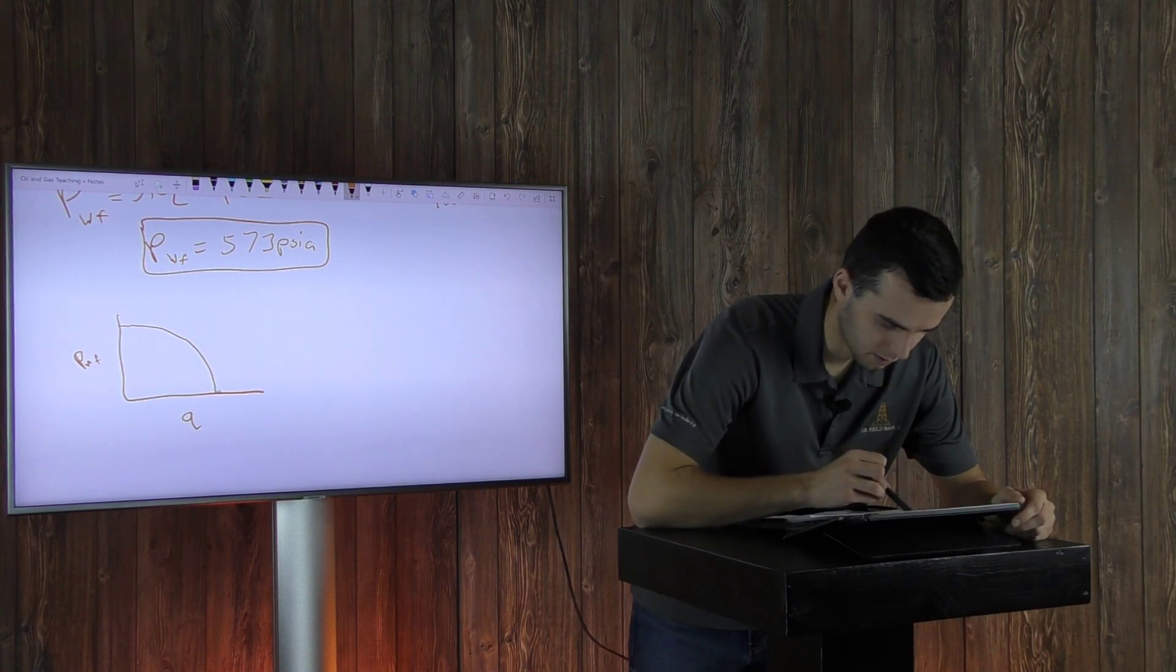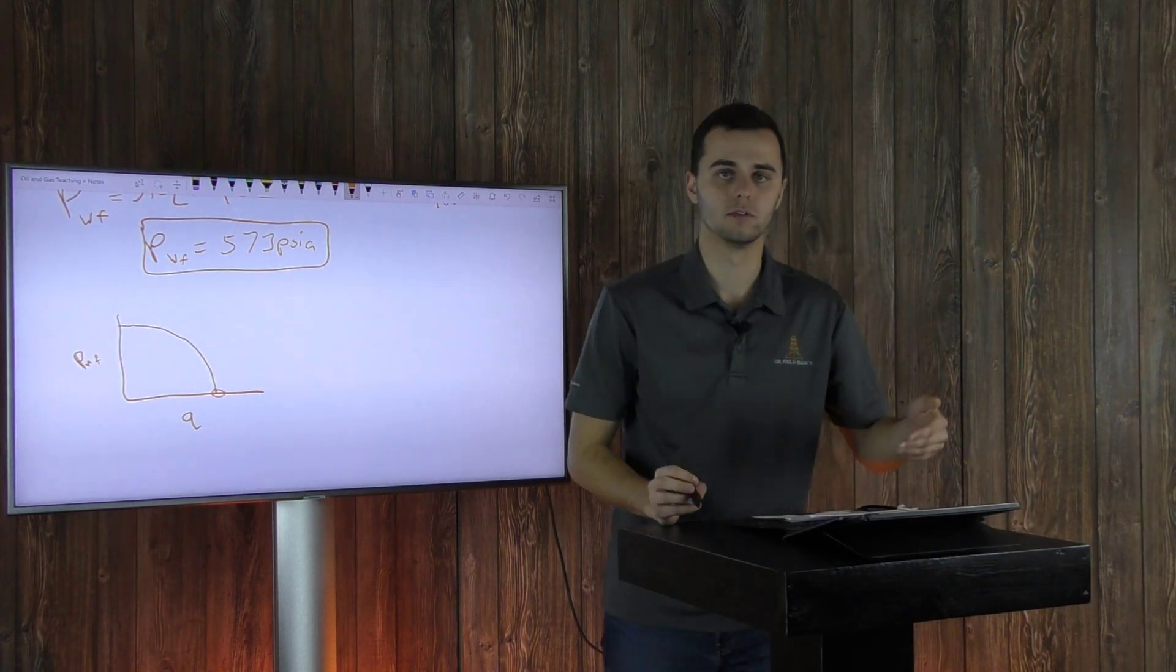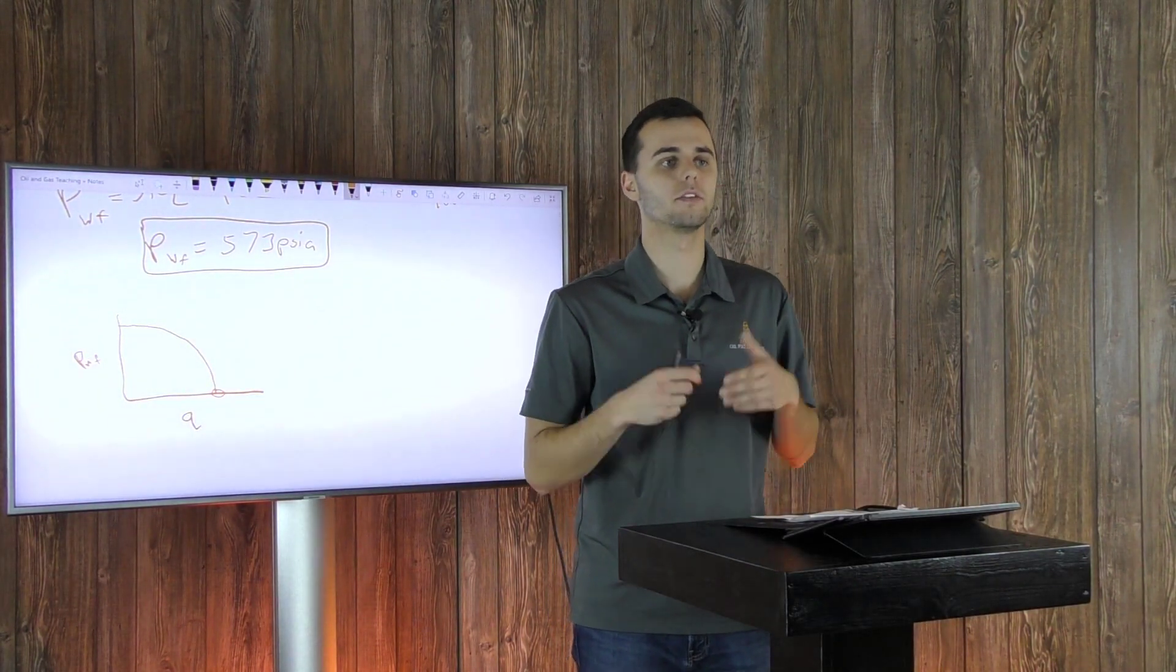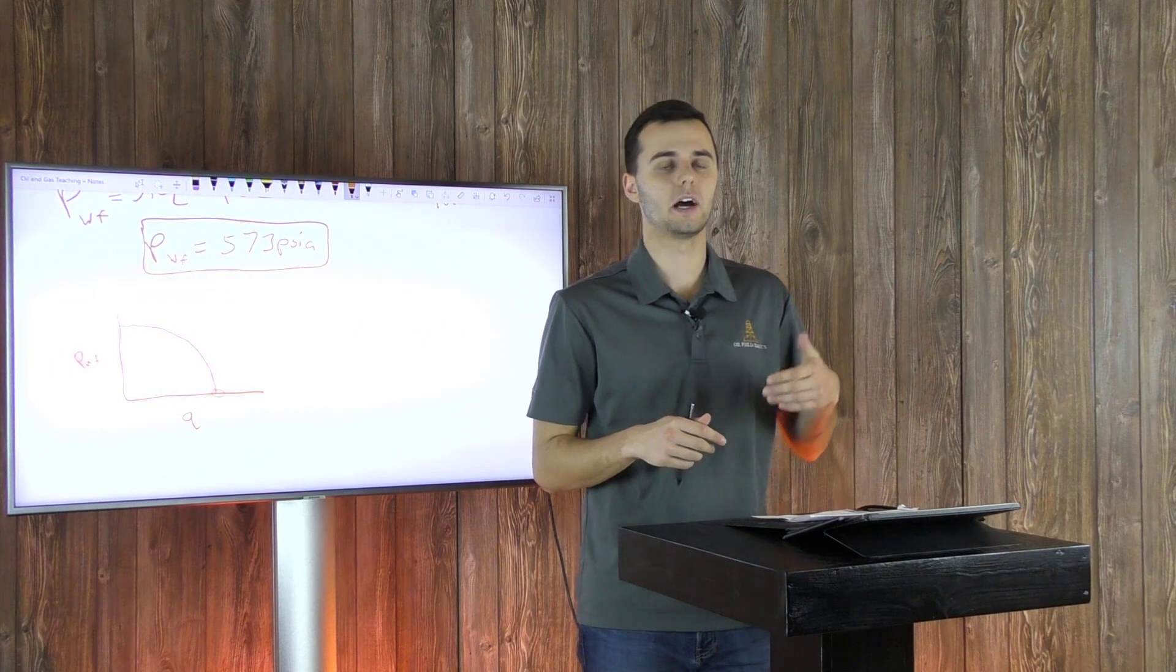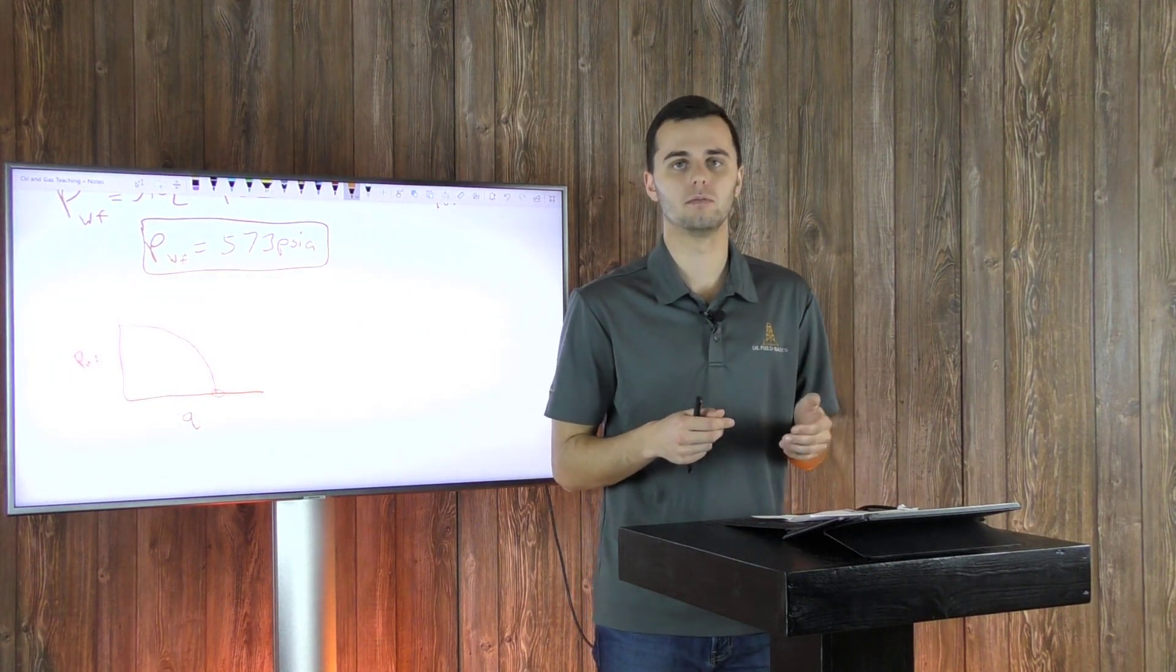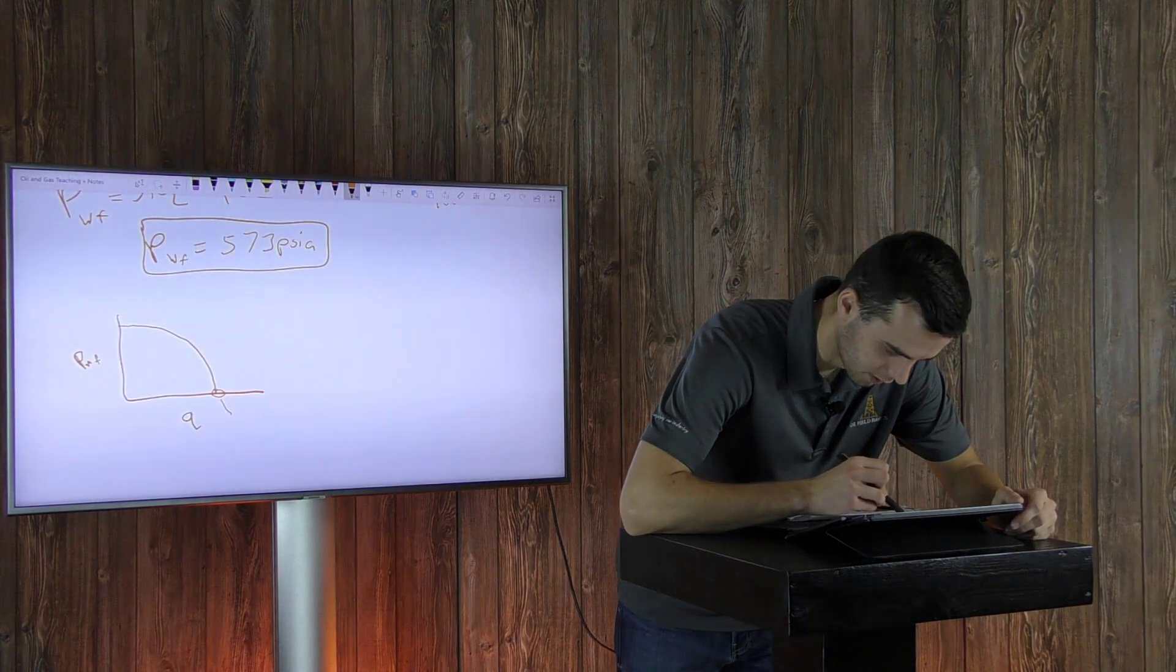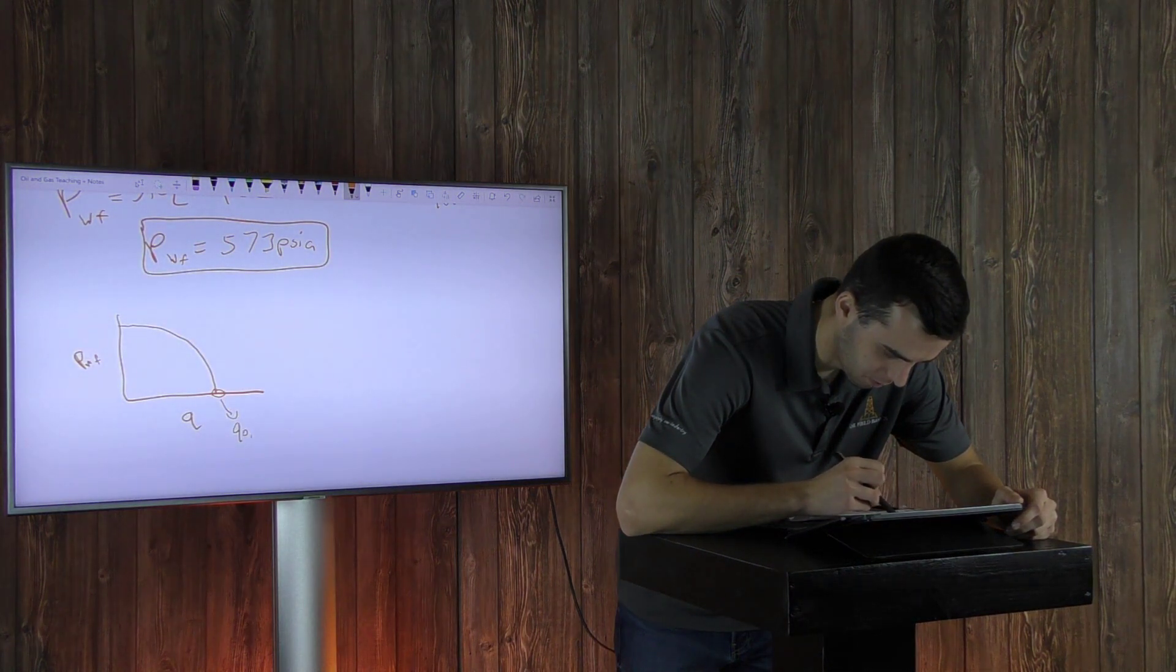And so this value right here, when your PWF equals zero, this is your max flow rate. So if all things considered, your pressure downhole was zero, this is how much you will be producing at its maximum potential. We're going to call this QO max.